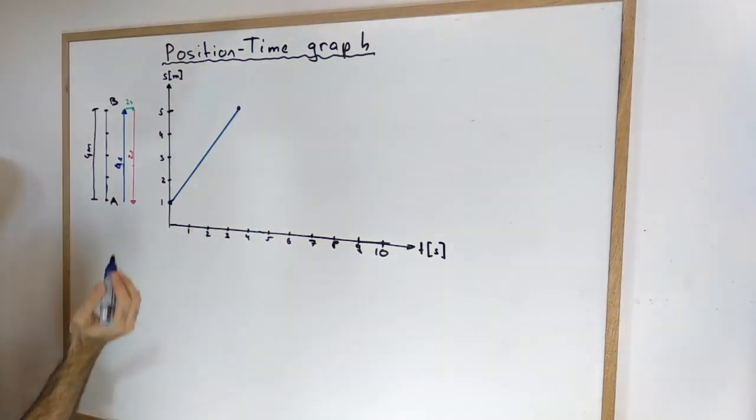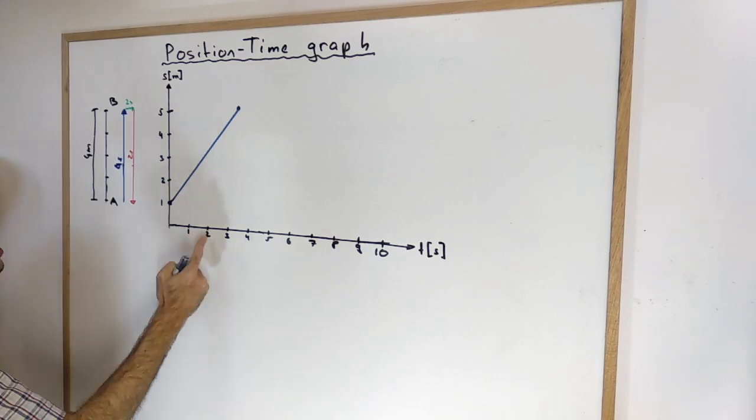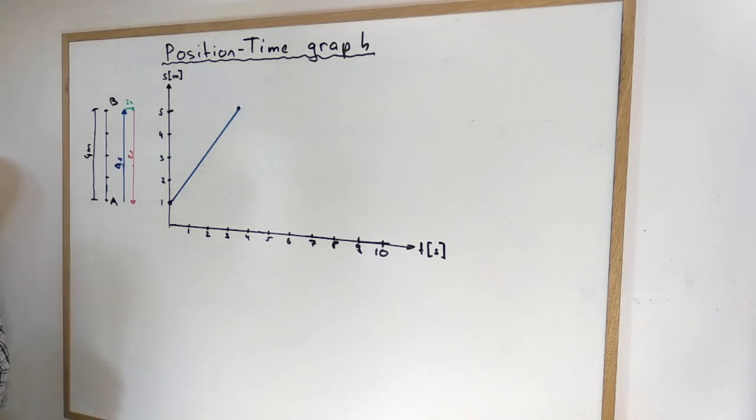So now we could get a good estimation, where was the object at 2 seconds. So at 2 seconds it was at about 3 meters, at 3 seconds around 4 meters, and so on.